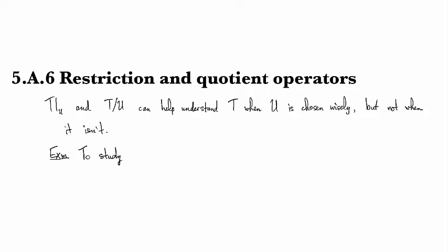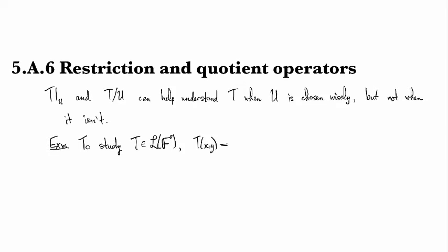So suppose we've got an operator T on F² and it's given by sending the point (x,y) to the point (y,0).